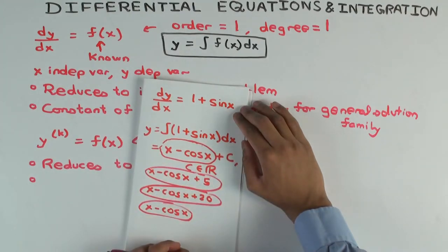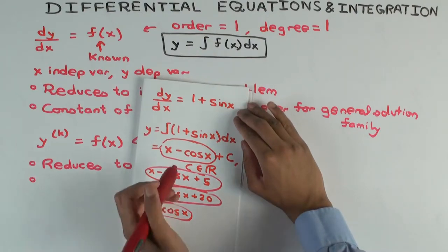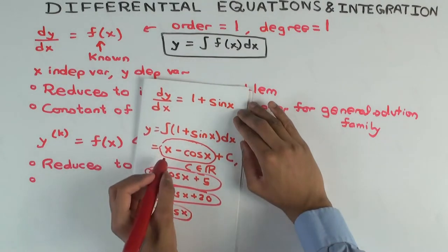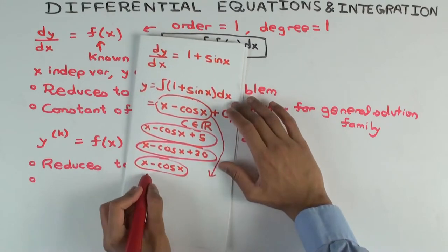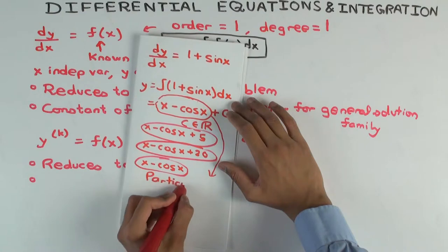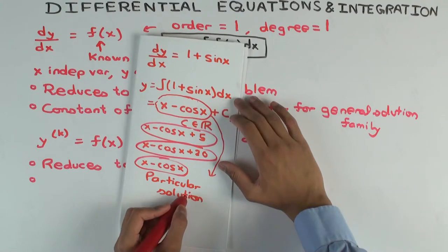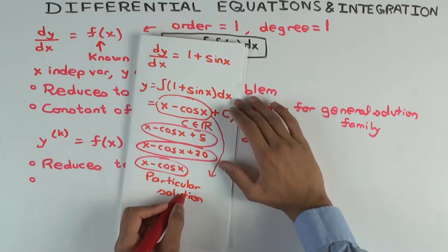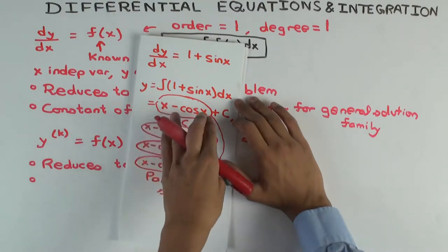In the language of differential equations, a particular antiderivative is a particular solution — for example, x − cos(x). And x − cos(x) + C as C varies over the reals is the solution family, which in this case gives all the solutions, so that is the general solution.